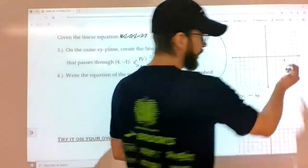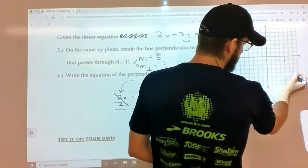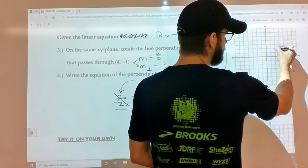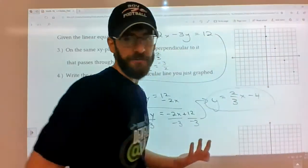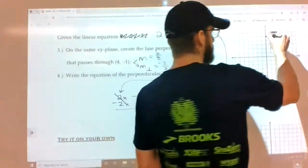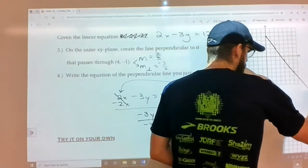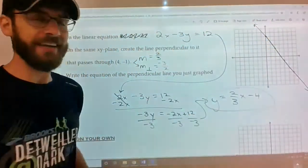So that means you would go down 3, right 2, or up 3, left 2, up 3, left 2. And you'd keep going if you could put some more on there.